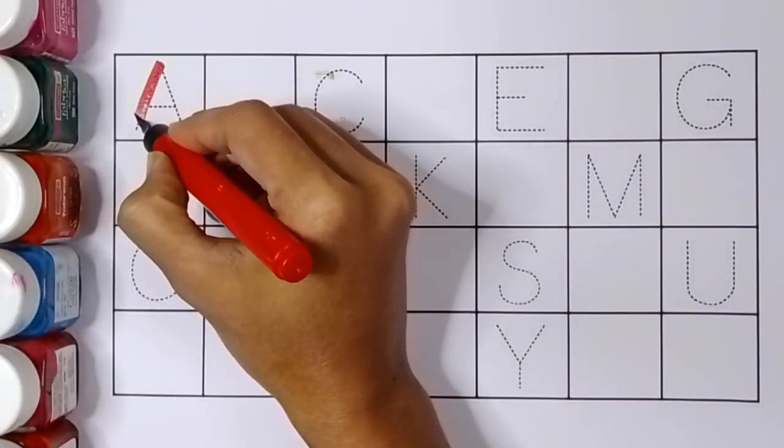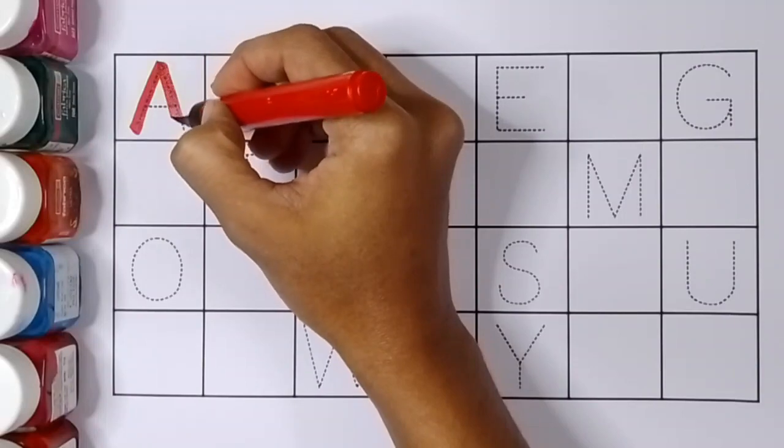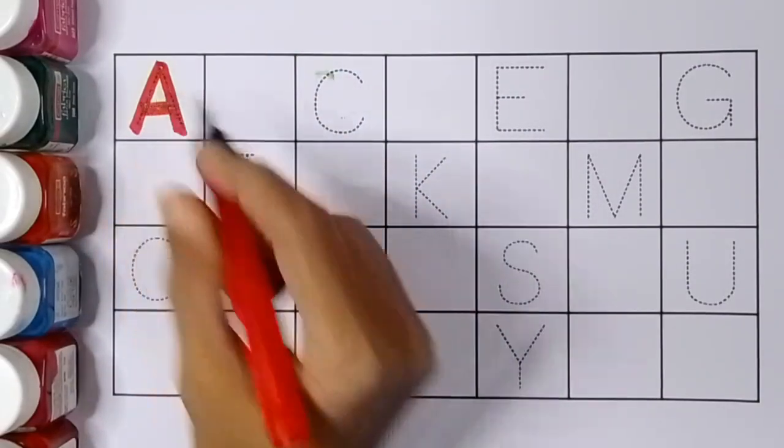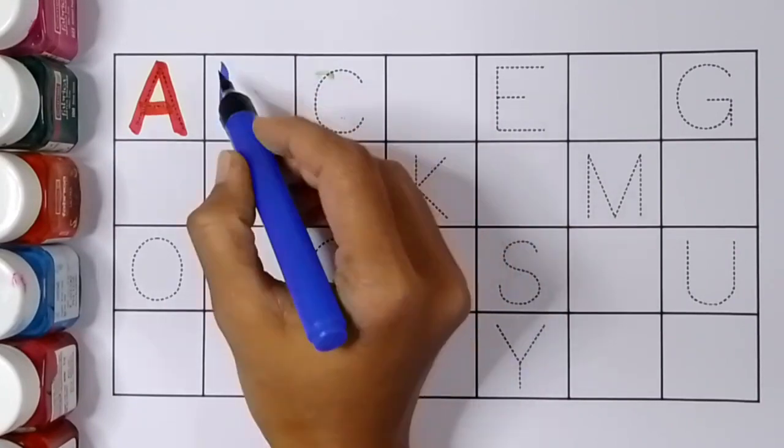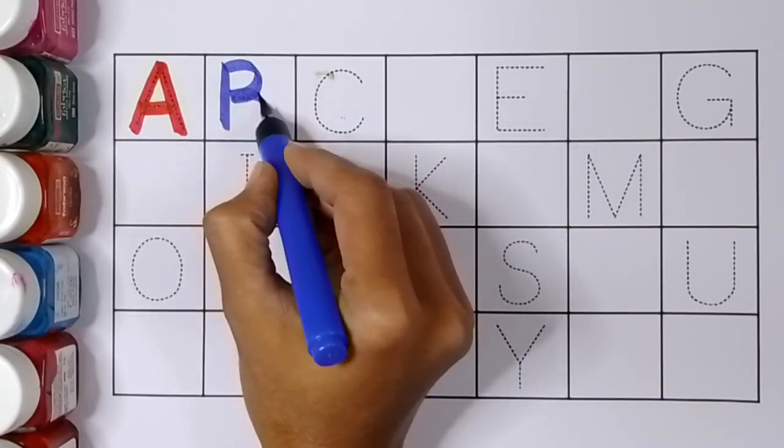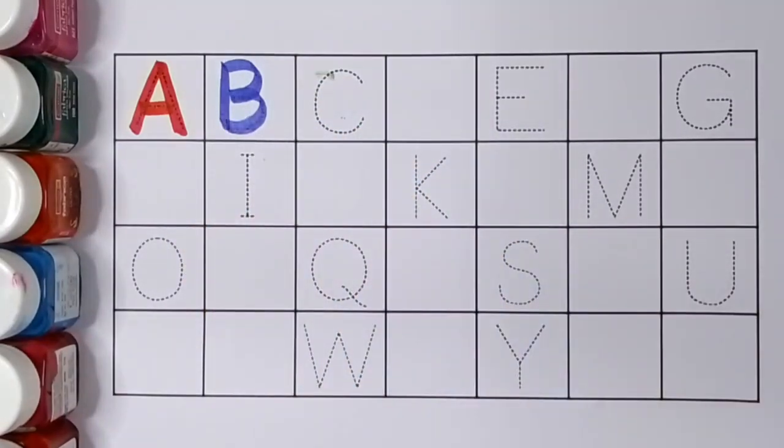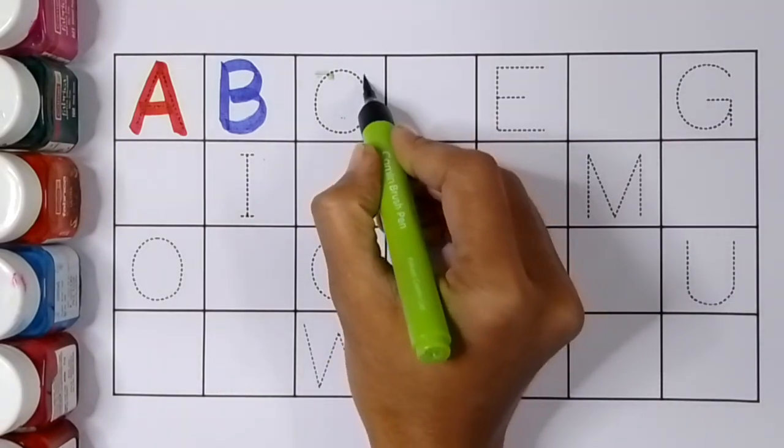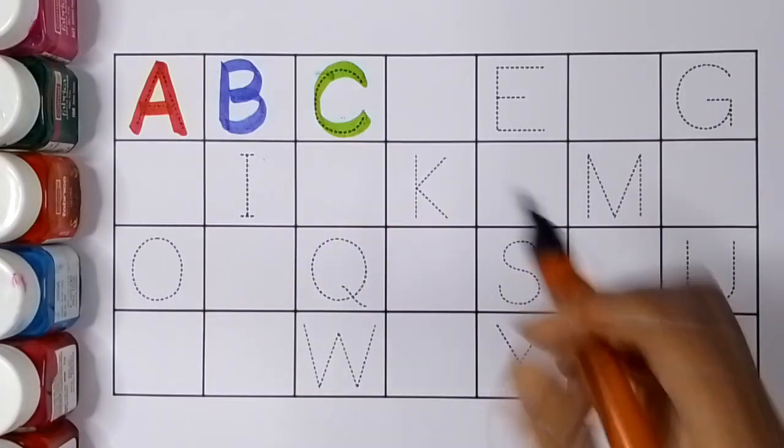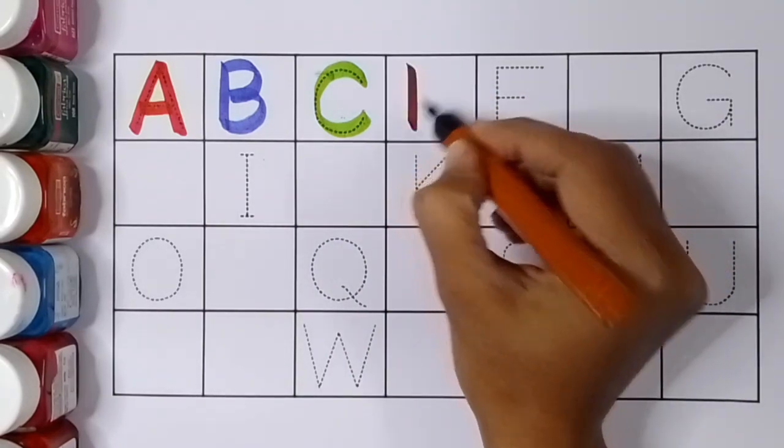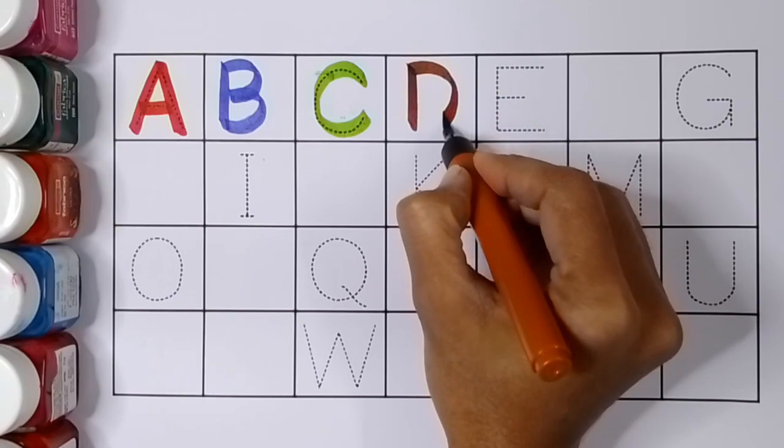A. A for aeroplane. B. B for boy. C. C for cow. D. D for duck.